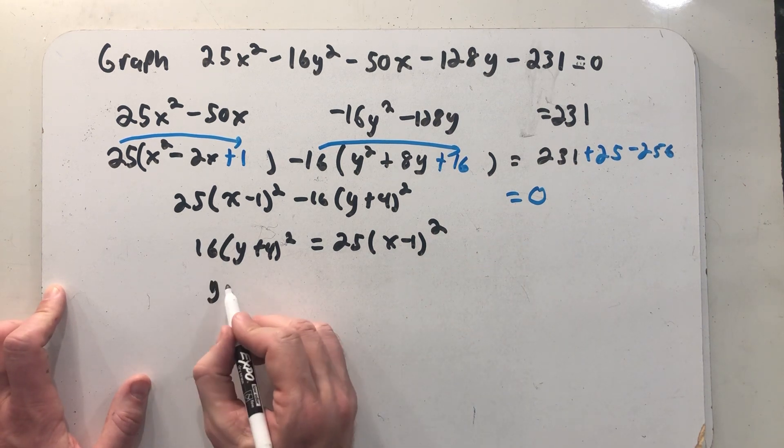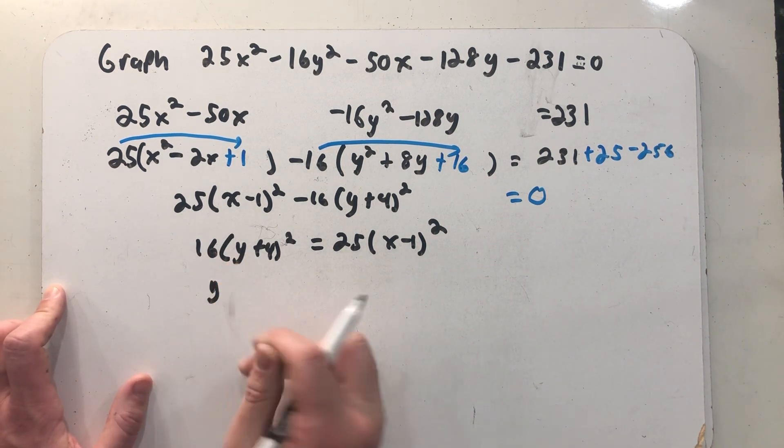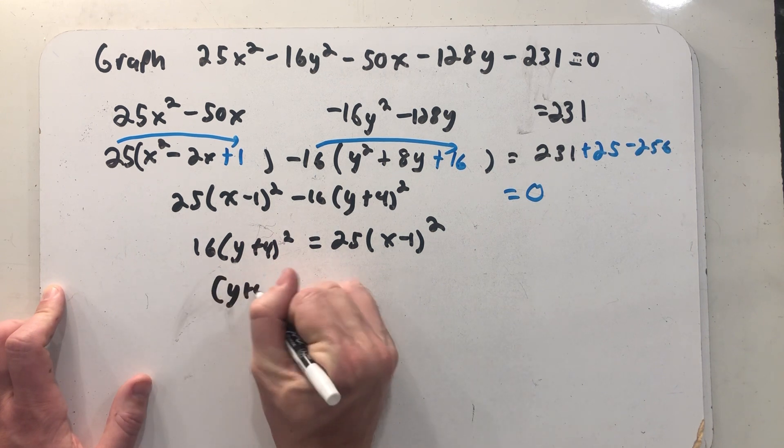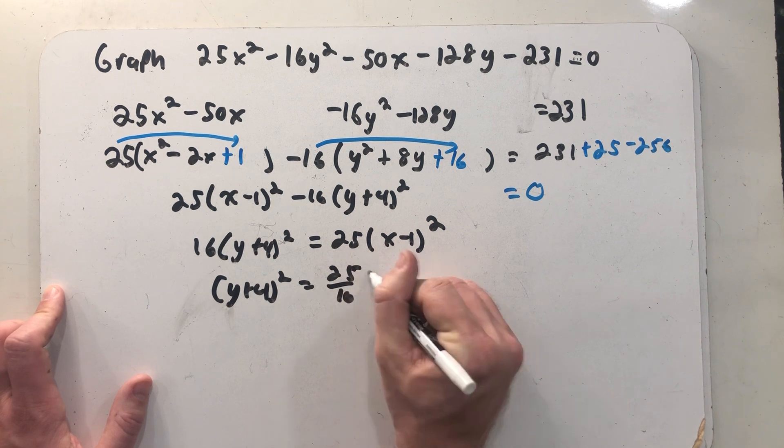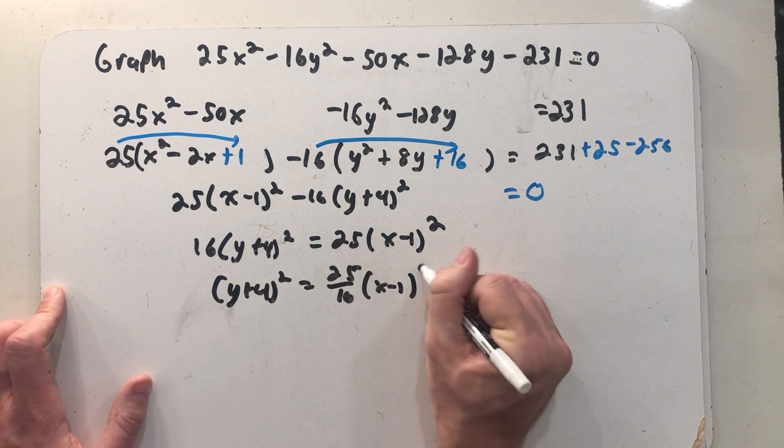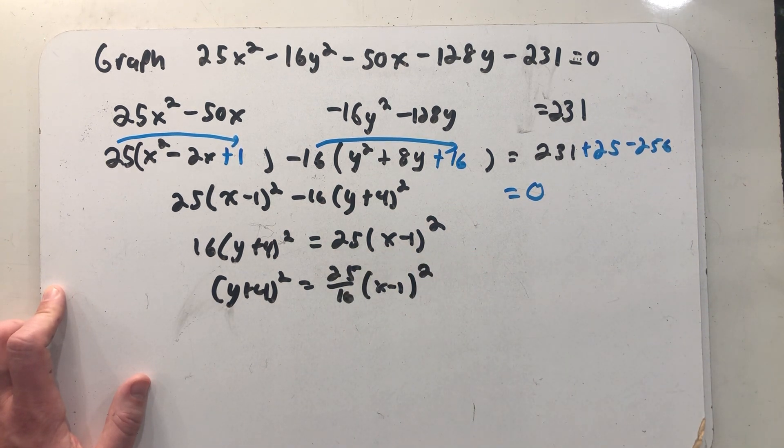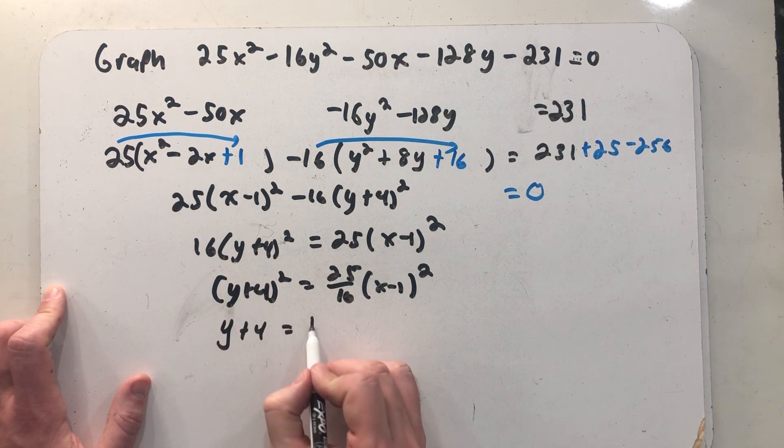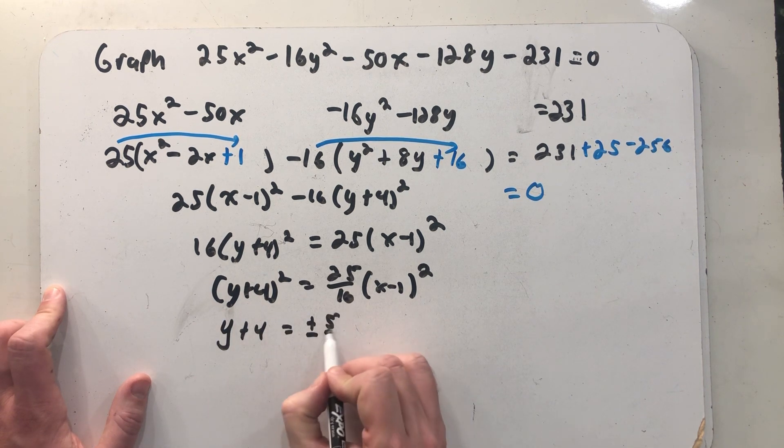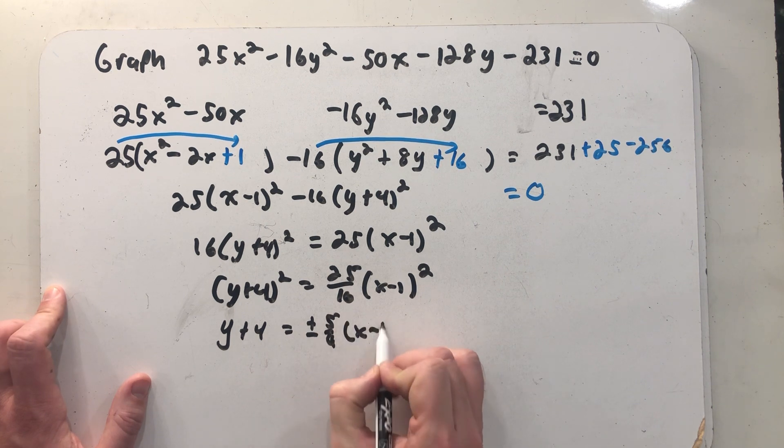I'm going to divide both sides by 16. Got a little ahead of myself there. And now I'm going to solve for y. I'm going to get y by itself. So I'm going to take the square root of both sides. So that's going to give me a plus or minus 5 fourths times x minus 1.